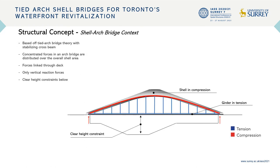The bridge follows the principle of a tied arch with tension and compression. However, instead of having concentrated members, the forces are distributed over a larger area, allowing for very slender shell plates. Furthermore, the forces are linked together through the deck, resulting in only vertical reaction forces under gravity loads and giving us the opportunity to minimize the abutments.